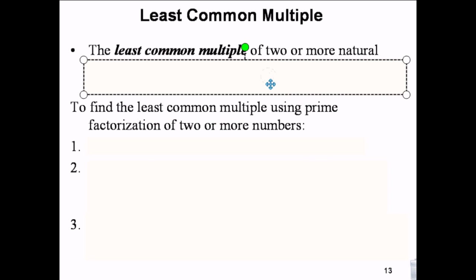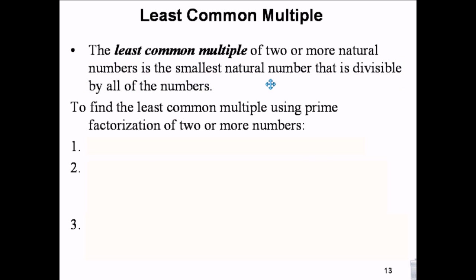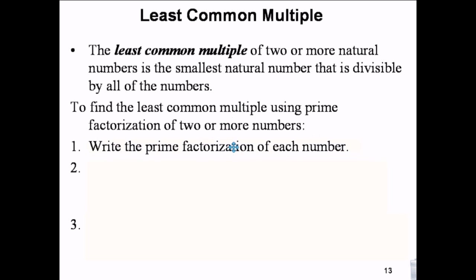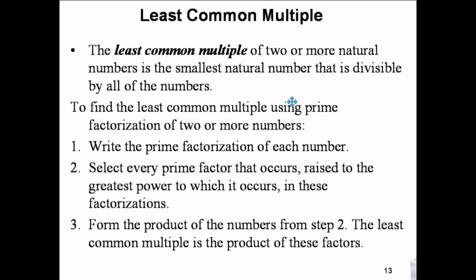The least common multiple is the smallest natural number that is divisible by the numbers you're talking about — the smallest number those numbers will go into. We're going to find it by doing the prime factorization of each number, matching pairs, and then taking one from each matching pair plus everything left over.